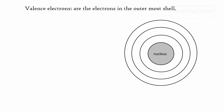Valence electrons are defined as the electrons in the outermost energy shell. Let's have sodium as an example. I will write the electronic configuration for sodium. By the way, I will keep a link in the description below for a video showing you how to write the electronic configuration.